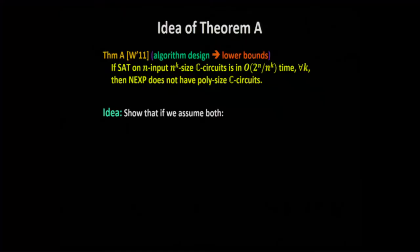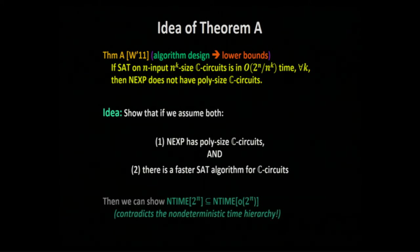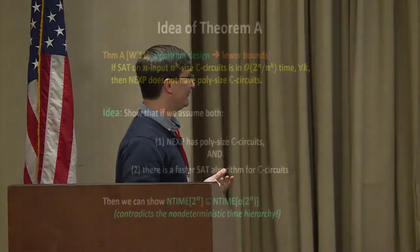The idea of Theorem A will look familiar to the previous approach. We assume NX has small circuits and there is a faster SAT algorithm — both positive algorithmic assumptions — and use them to show that nondeterministic time 2-to-the-n can be generically sped up, giving a contradiction. So if there were a faster SAT algorithm, then there must not be small circuits for NX. The entire argument is still an algorithmic argument in the style I was learning way back at DIMAX.